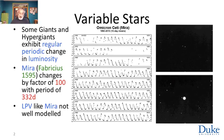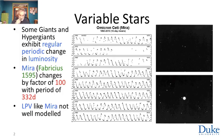Mira was discovered to be variable probably earlier, but at least as early as the 16th century. As you can see in the two pictures on the right, its luminosity changes dramatically by a factor of 100, with a period that averages about 332 days but is variable. It was discovered by the early astronomer Fabricius, and variable stars are traditionally a regime where citizen scientists have great contributions to make.